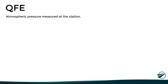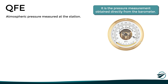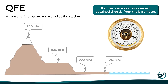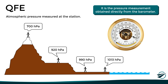The first concept is the QFE. This is simply the atmospheric pressure measured at the station — in other words, the pressure measurement obtained directly from the barometer at the station. So, according to what we said previously, we could compare directly the QFE between stations that are at the same level to determine high and low pressure areas, but what we cannot do is compare the QFE between stations at different elevations.